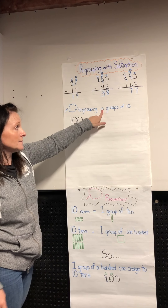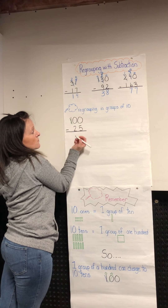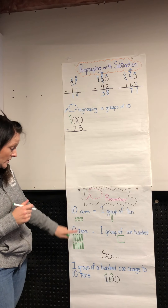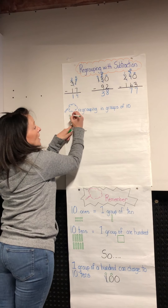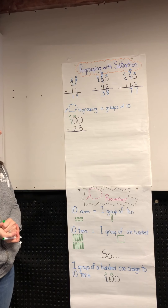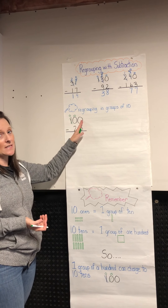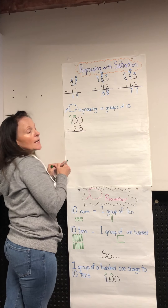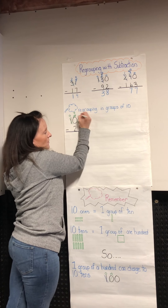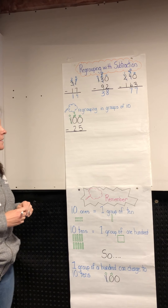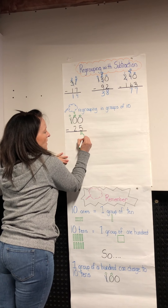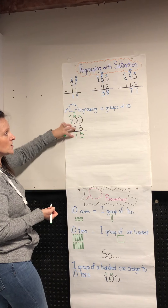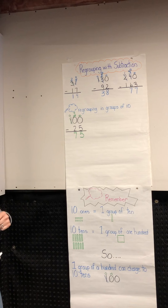This is where we really have to think about our groups of ten. I'm going to borrow from my hundreds — there was one there, now there's nothing. I bring my ten tens right next door to the tens column because a group of a hundred is ten tens. But I still can't do zero take away five, so now I borrow from ten groups of ten: cross out my ten, now I have nine, and I change one group into ten ones. Ten take away five is five, nine take away two is seven, and zero take away nothing is zero.